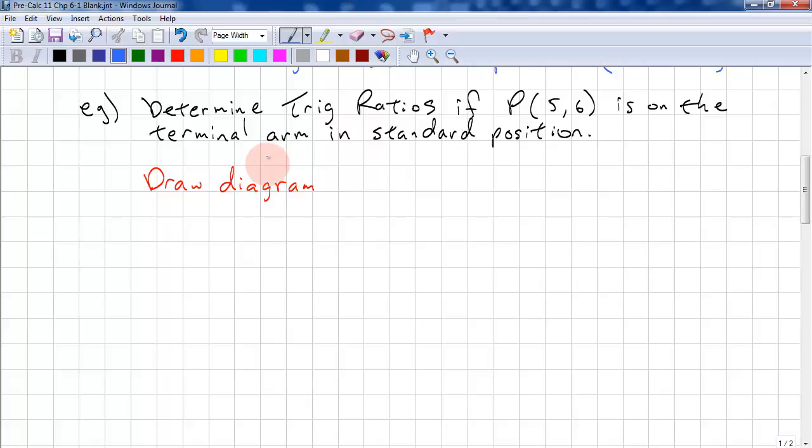Here's a typical problem: Determine the trig ratios if the point (5, 6) is on the terminal arm in standard position. Always draw a diagram. So this is 5, this is 6. This is x, this is y, this is r, this is theta.